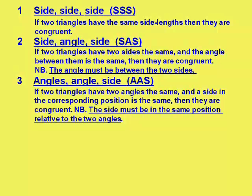If you have two angles and one side, angle, angle, side, then they are congruent, providing the side is in the same position corresponding to the two angles. In other words, it's in exactly the same position relative to both the angles.